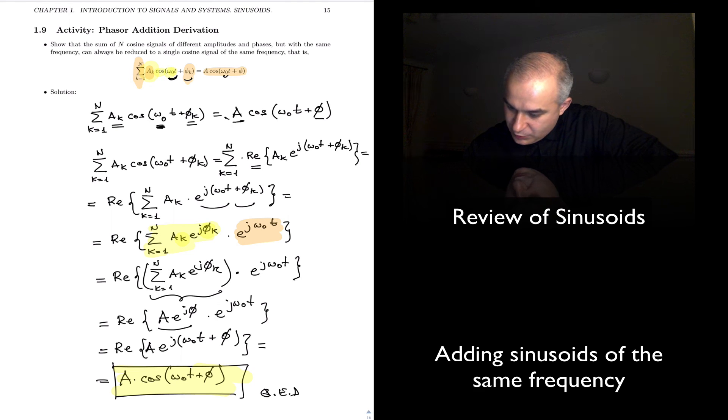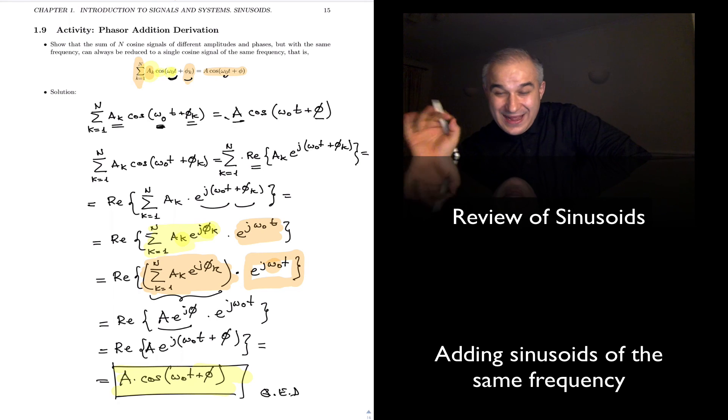And eventually, a critical step was here, when we arrived, where we were adding complex exponential numbers, I mean, we were adding numbers, but this addition did not affect at all this other part here, because omega zero was not omega k, it did not depend on the